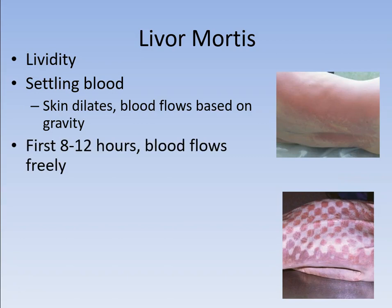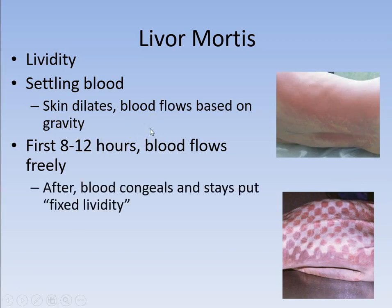For the first 8 to 12 hours, the blood can still move through your body — it flows freely. If you roll the body over, the blood will move. After this time, it becomes what's called fixed. The reason this happens is the blood is now starting to congeal, to harden and dry up, and then it stays put. So for the first 8 to 12 hours, if you move the body, the blood moves with it. But after a certain period during these 12 hours, the blood starts getting too thick to move and will stay in one place.